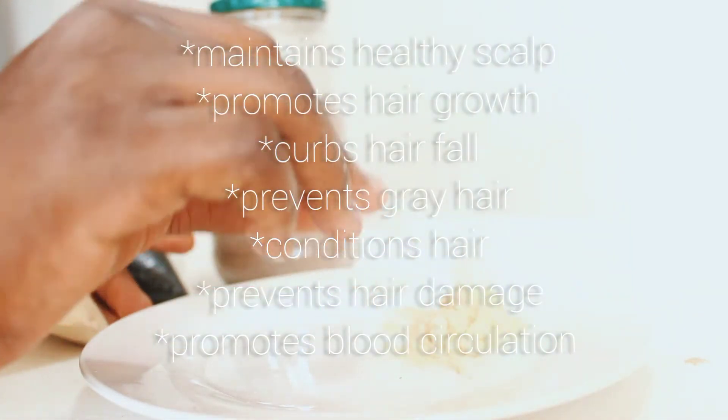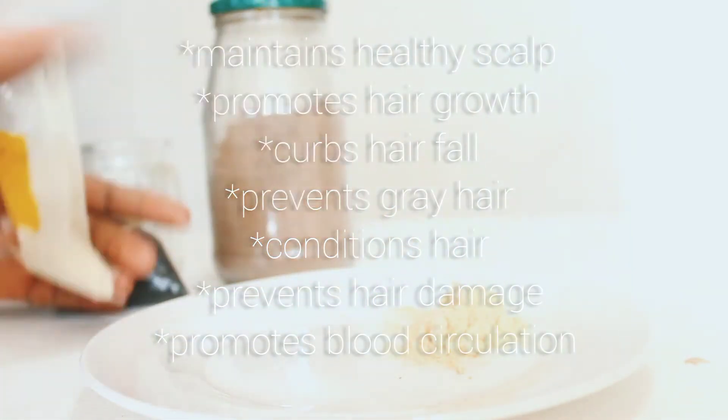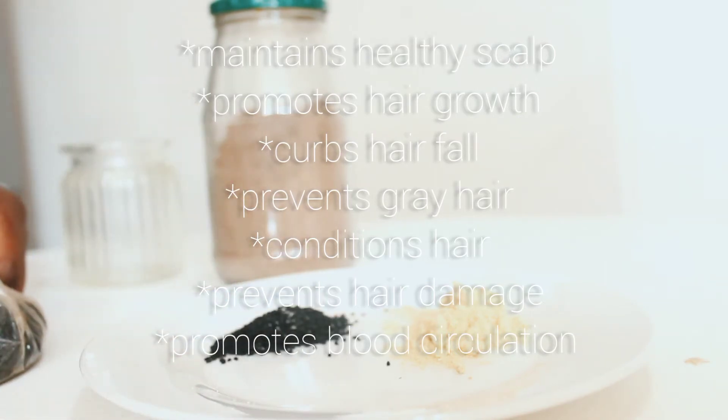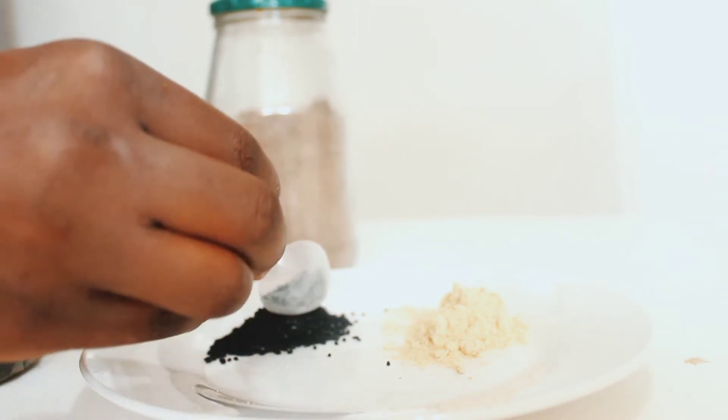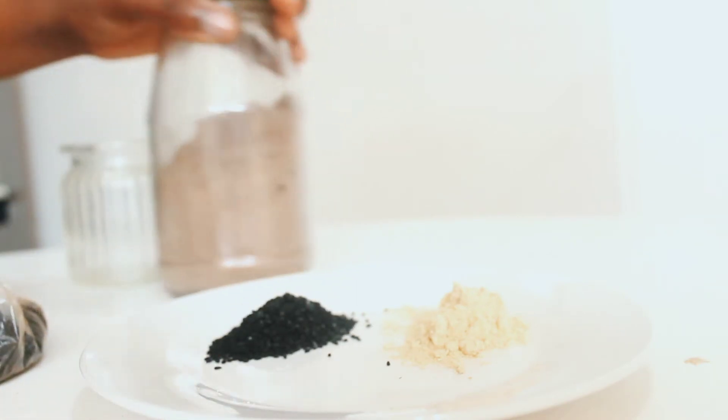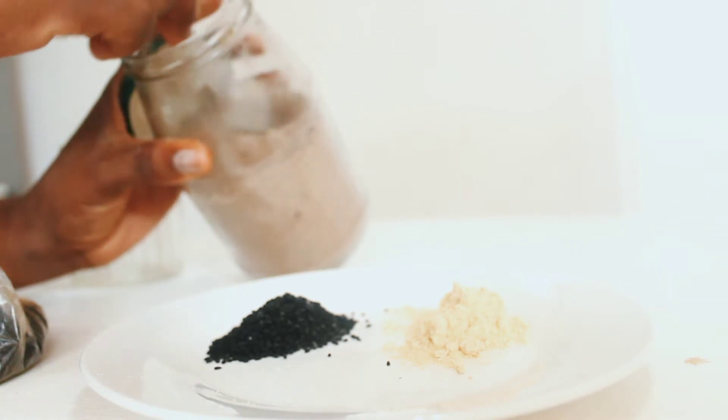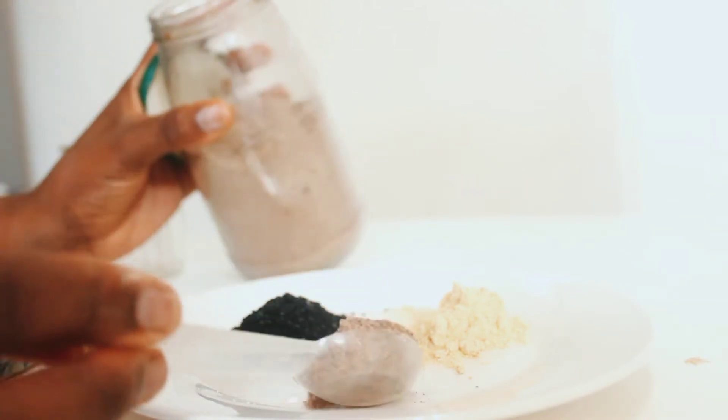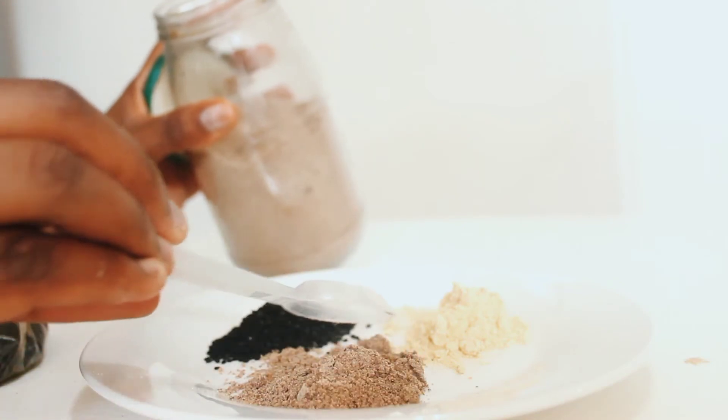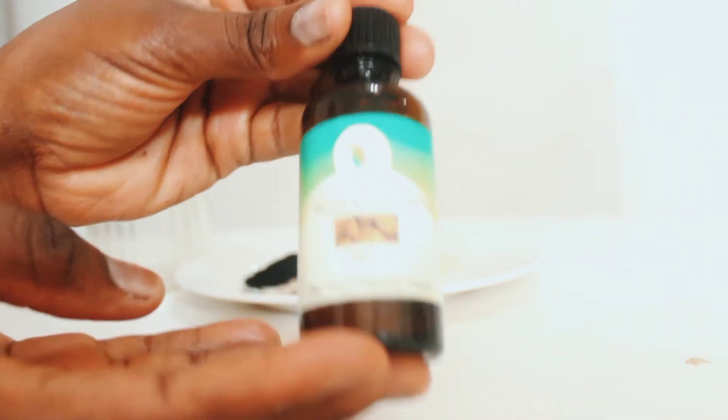What you need is a teaspoon of fenugreek powder. I'm using the fenugreek powder and a teaspoon of black seeds. You can use black seed powder as well, but I only have seeds, I don't have the powder. I'm also using a teaspoon of flax seed powder.